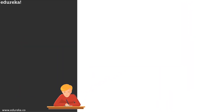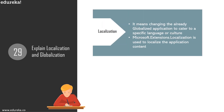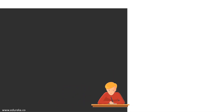Question 29: explain localization and globalization. Globalization is the process of designing an application so it can be used by users from across the globe. Localization, on the other hand, is the process of customization to make an application behave as per the current culture or locale.